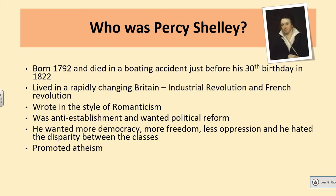He really didn't believe that the direction Great Britain was taking was the right way. He wanted more democracy — more people to be able to have a say and have the vote. At this time, unless you were a fairly wealthy man, you couldn't vote. So if you were poor, you wouldn't be able to vote. He wanted people to have more freedom, less oppression, and he hated the disparity between the classes.